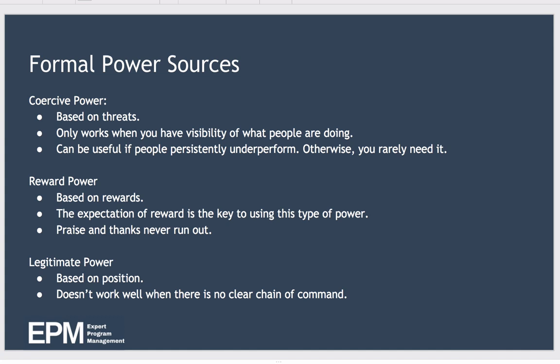With reward power, you use rewards to achieve compliance with your wishes. Examples of rewards include things like bonuses, pay increases, days off in lieu, training opportunities, or even simply a public compliment or thank you. The trick to using reward power is to create the expectation of reward and trigger that part of the brain that enjoys being rewarded for hard work. As a simple example, if you always publicly praise your high performers and never praise your poor performers, you create a desire in others to want that praise — and to get the praise, people will be prepared to work hard.